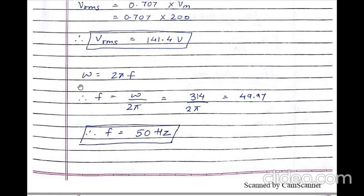Next, to calculate frequency, using the formula omega is equal to 2πf, so f is equal to omega upon 2π. We know omega is equal to 314, so frequency is equal to 314 divided by 2π, giving frequency f equal to 50 hertz. Therefore, RMS value is equal to 141.4 volt and frequency is 50 hertz.